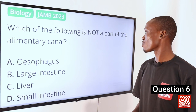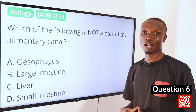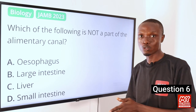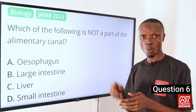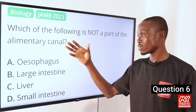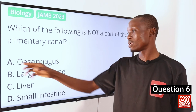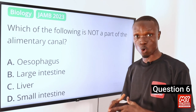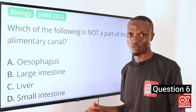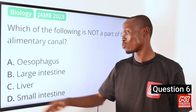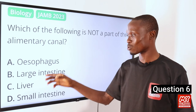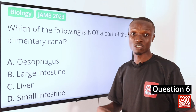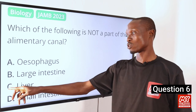Question 6. Which of the following is not a part of the alimentary canal? The alimentary canal is a long tube that extends from the mouth to the anus, including the esophagus, mouth, stomach, and large and small intestines. Option A, esophagus — part of the alimentary canal. Option B, large intestine (colon) — also part. Option C, liver — not part of the alimentary canal. Option D, small intestine — part of it. The answer is option C, liver, which is instead an excretory organ that secretes bile.